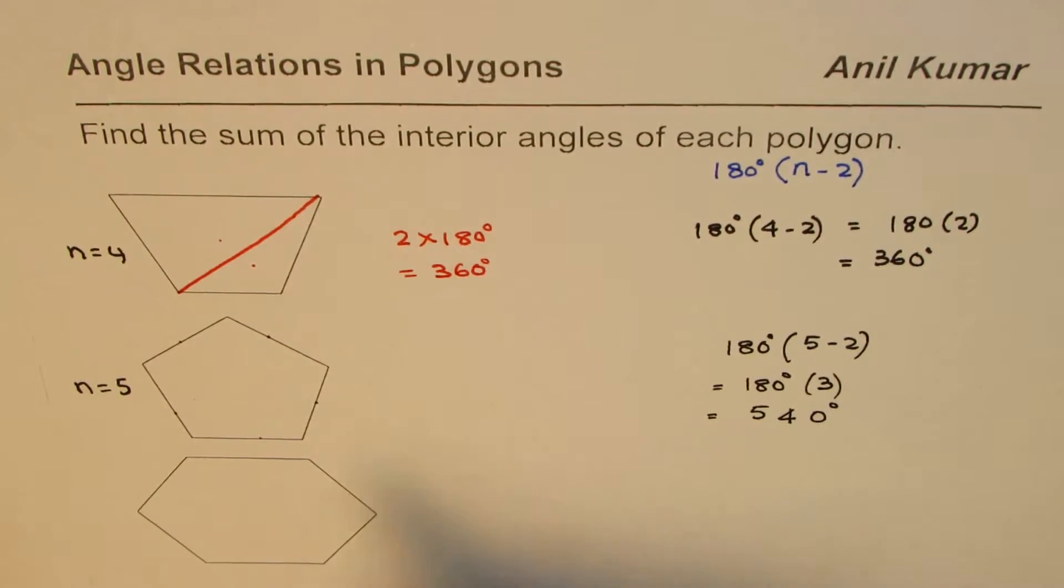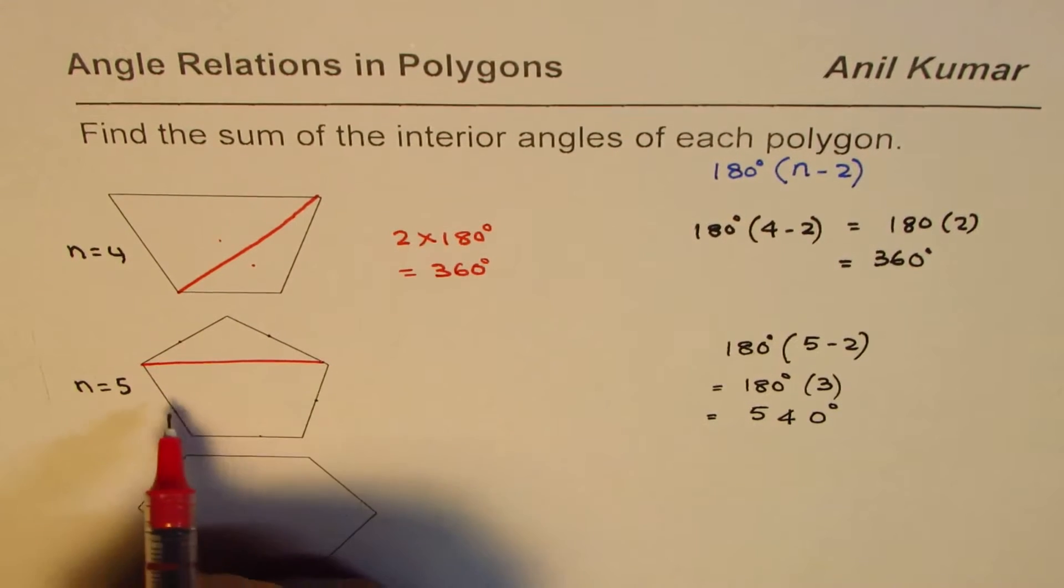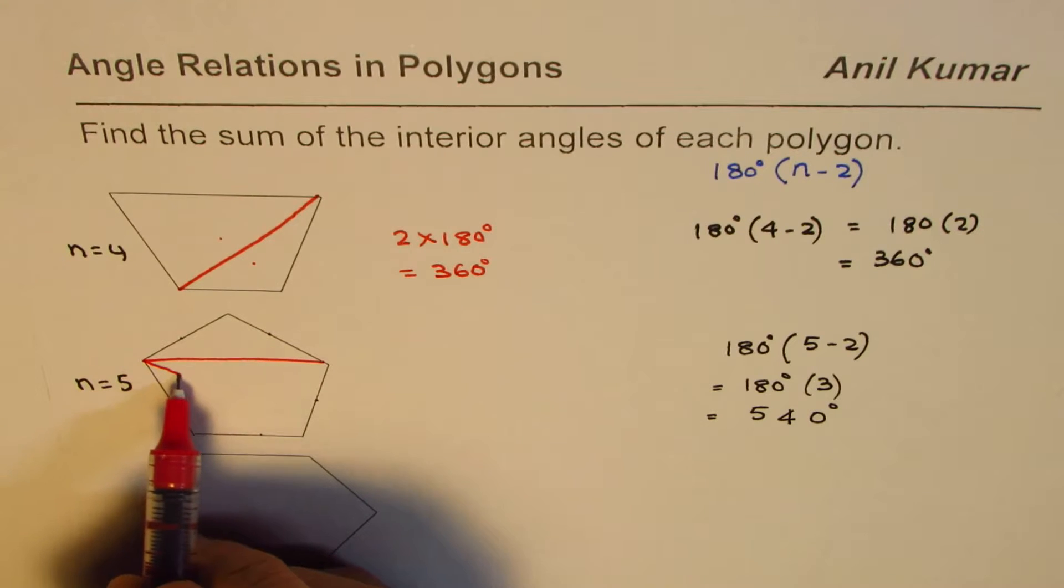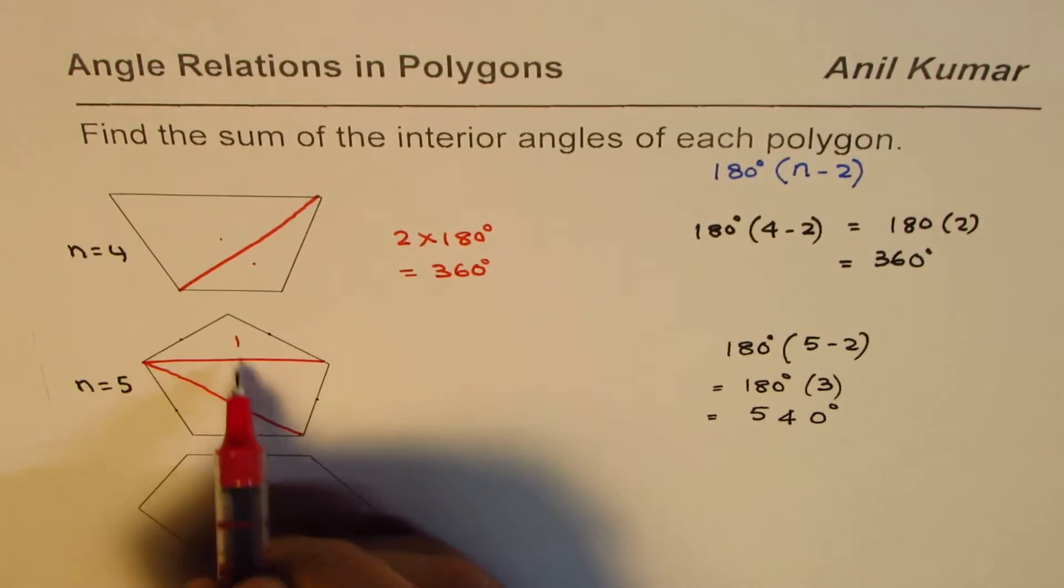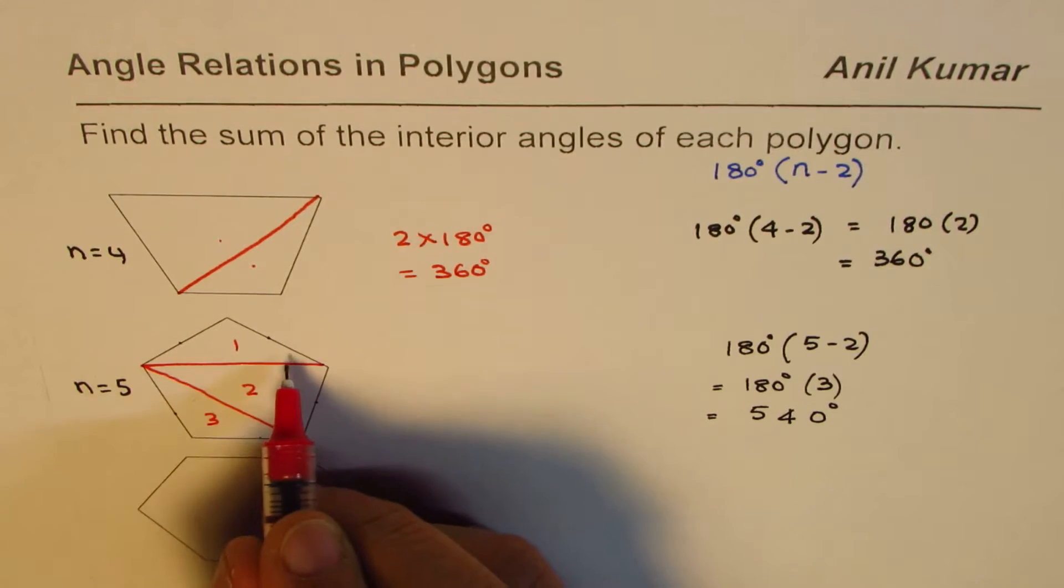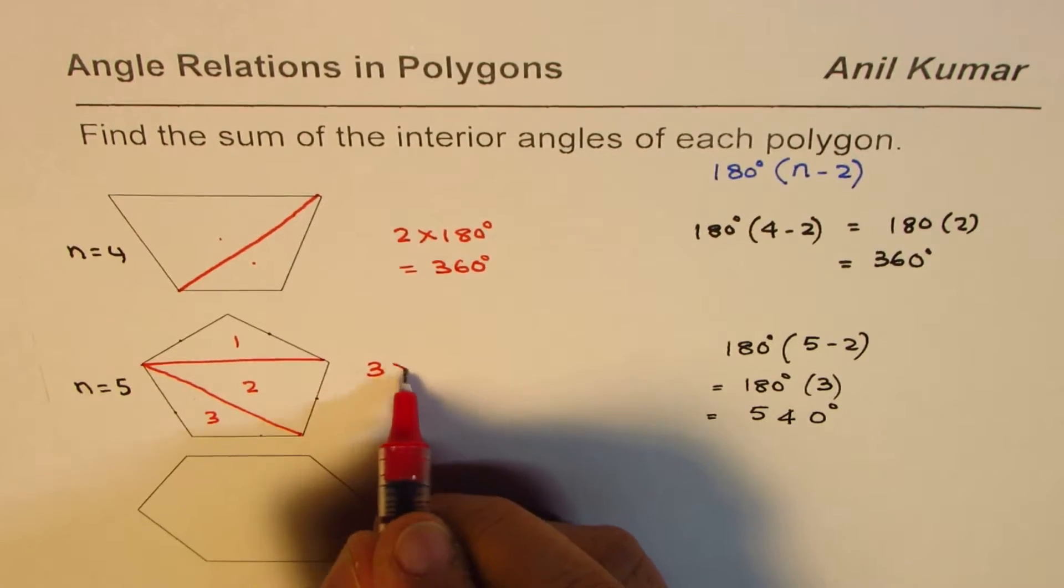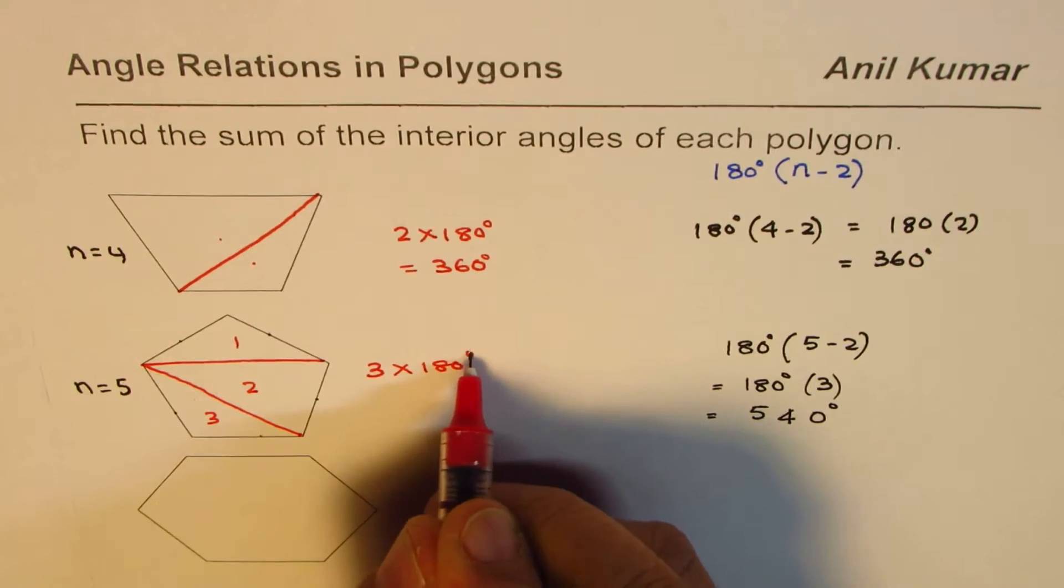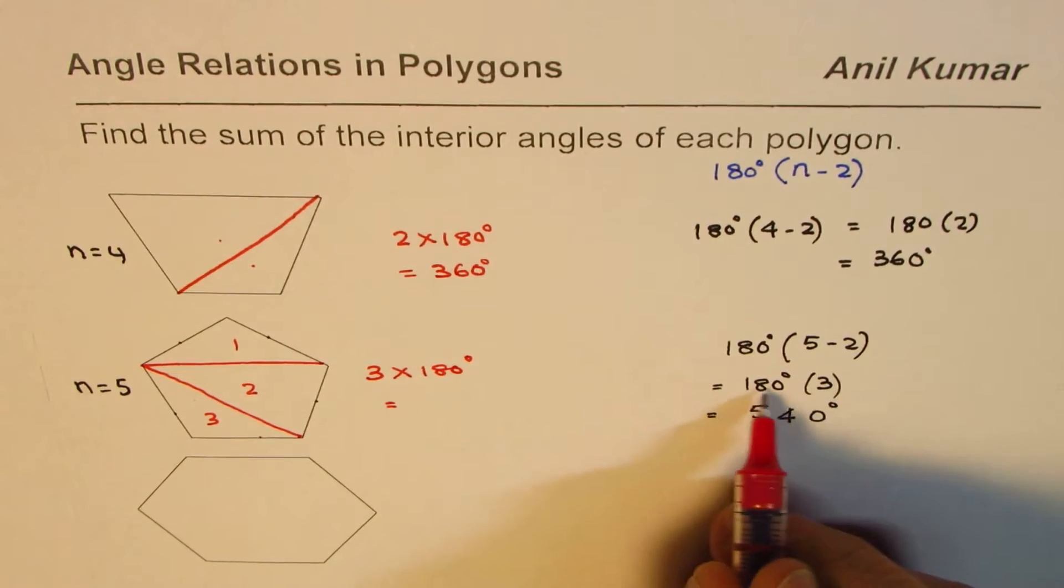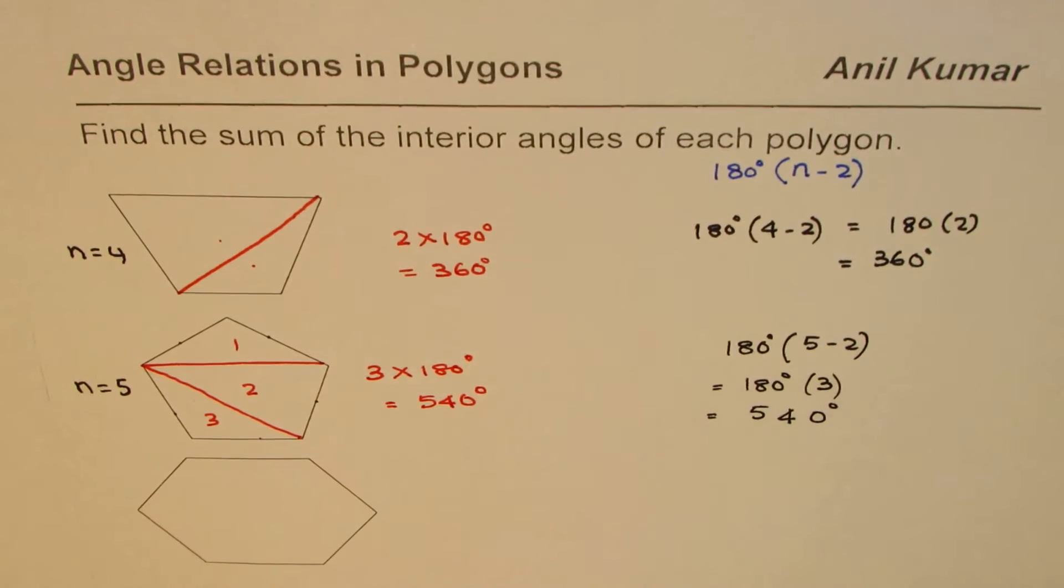You could also see how many triangles are formed. Take one vertex and join it to the others. We have 1, 2, and 3 triangles. Each triangle has an interior angle sum of 180 degrees. So 3 times 180 degrees gives the answer: 540 degrees.